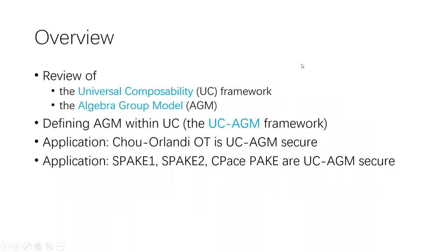Here's an outline of my talk. Our work combines two powerful models in cryptography: the Universal Composability or UC framework, and the Algebraic Group Model or AGM. I will first provide a brief overview of these two existing models, and then I will introduce our UC-AGM framework, which defines AGM within UC.